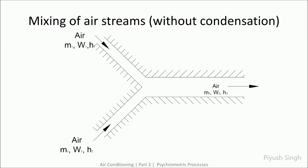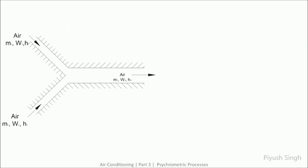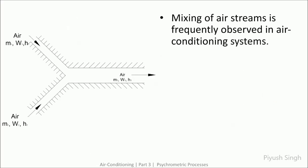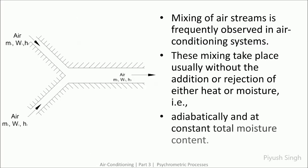In this case, air streams combine to form a single air stream on mixing. We have two inlets and a single outlet. In air conditioning systems, the mixing usually takes place without addition or rejection of heat and moisture. Hence the process is adiabatic and the total moisture content remains constant throughout the process.